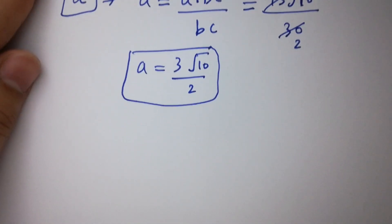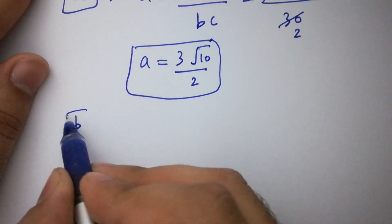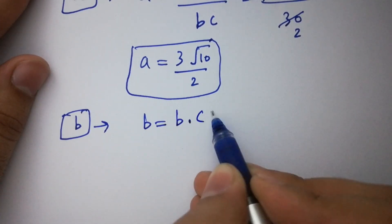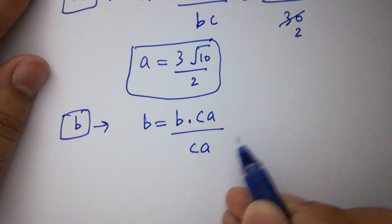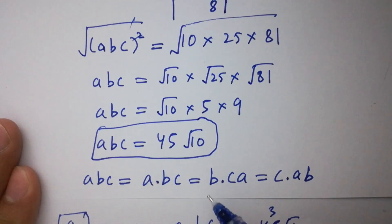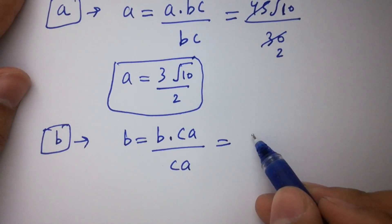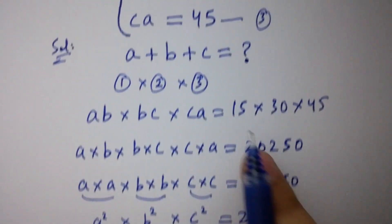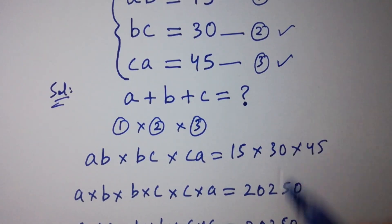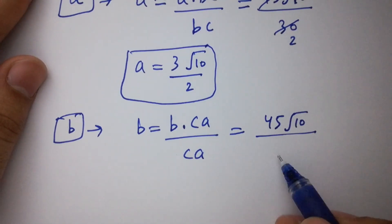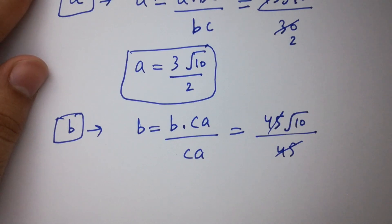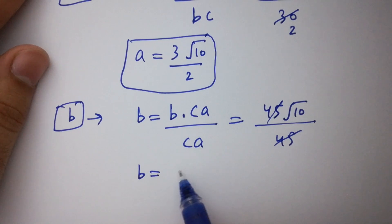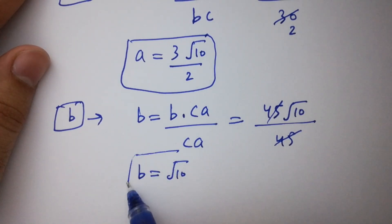Next, to find b: b equals abc over ca. So b equals 45 square root of 10 over ca. Since ca equals 45, the 45s cancel and we get b equal to square root of 10.